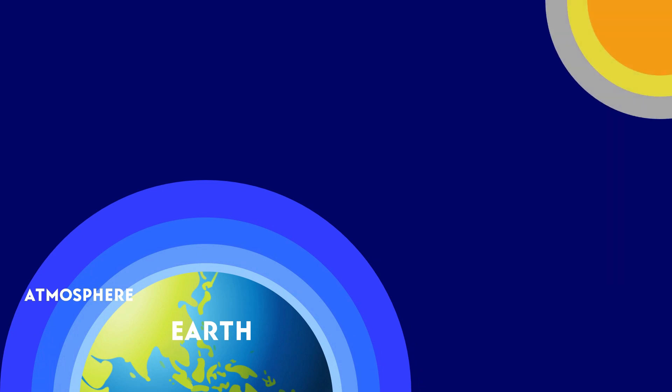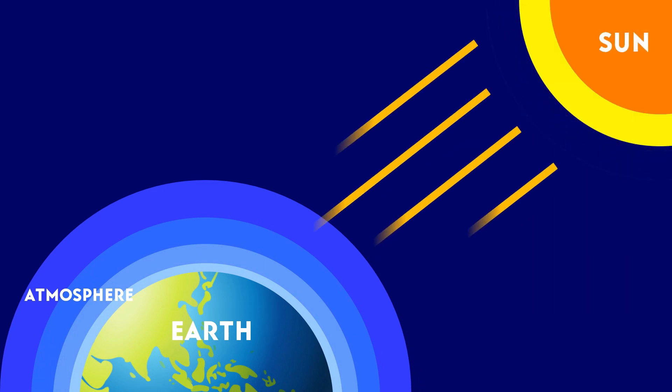When sunlight enters the atmosphere, the light rays are deflected in all directions by clouds or particles in the air.